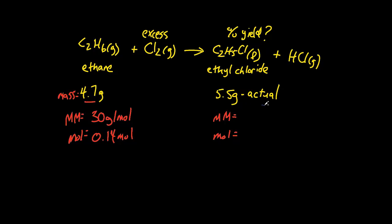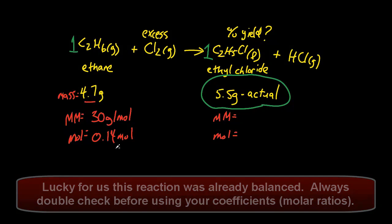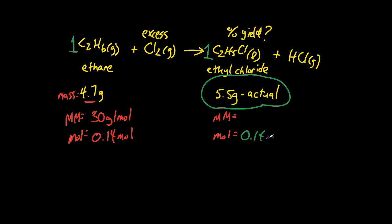Now remember, if we shift our attention now to the ethyl chloride, the 5.5 grams was the actual. Theoretically we should be getting something else. How can we figure that out? Well, if we know that there's a 1 to 1 molar ratio of ethane to ethyl chloride, we can then determine that if we have 0.14 moles of ethane going in, we should get 0.14 moles of ethyl chloride coming out. Remember that's what we should get, that's not what we actually got. So don't get those too confused.